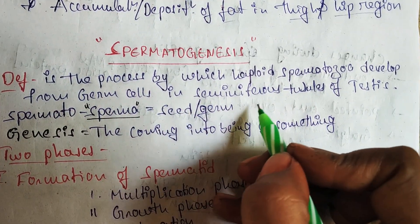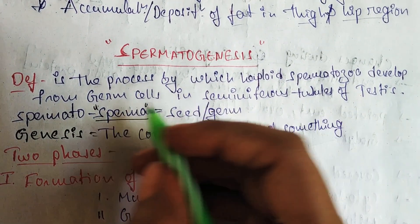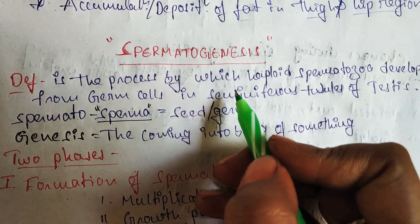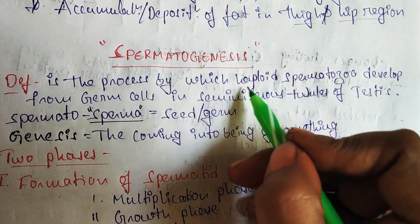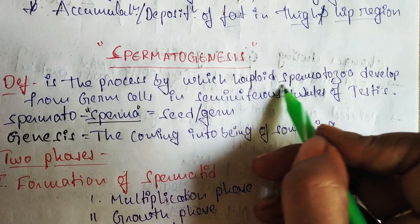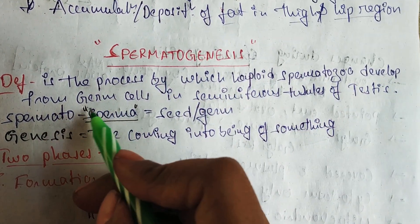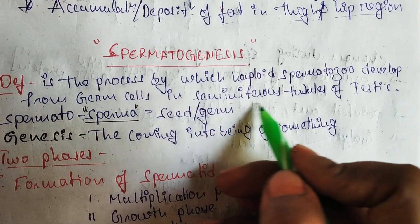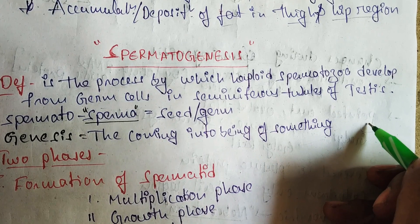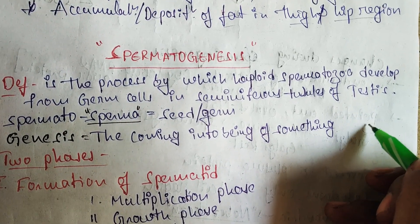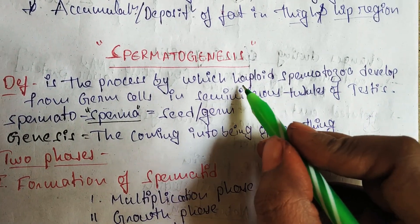In the male reproductive system, it is the process by which haploid spermatozoa — with a single set of chromosomes — develop from the germ cells in the seminiferous tubules of the testis. The seminiferous tubules are where germ cells are present and spermatozoa are produced.